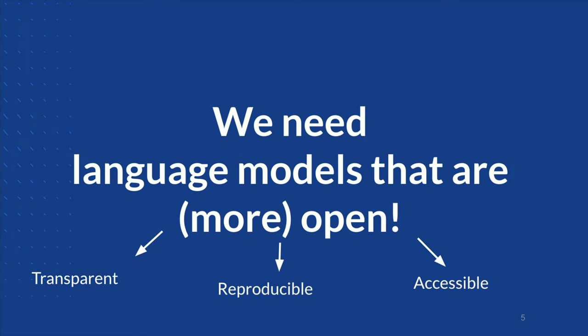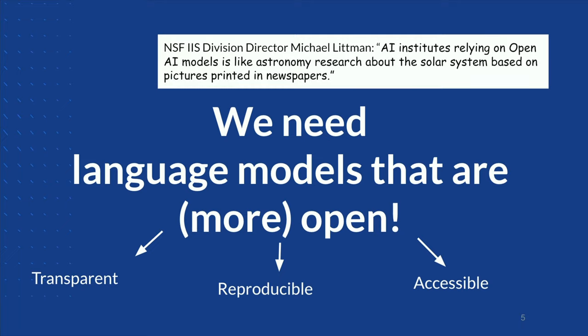We want to be able to build language models to scientifically analyze and understand the data and models, make sure that we can advance them, that they are reproducible. We also want to understand, when we say they are performing well, how can we assess data leakage if there are test examples in training data? We argue that we need language models that are open. As an NSF site director put it, if we are an AI institute without having access to an open language model, it's as if an astronomer is researching the solar system just by looking at pictures in newspapers.